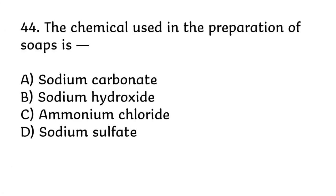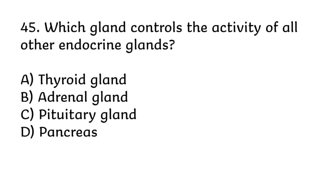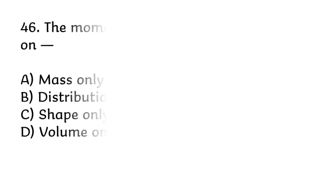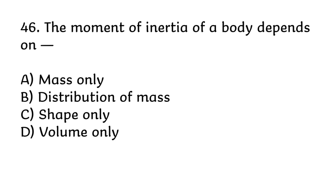The chemical used in the preparation of soaps is? Correct answer is B, sodium hydroxide. Which gland controls the activity of all other endocrine glands? Correct answer is C, pituitary gland. The moment of inertia of a body depends on? Correct answer is B, distribution of mass.